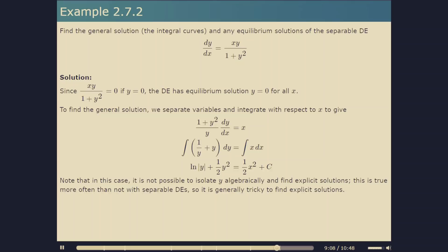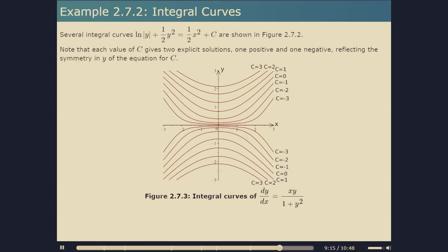Several integral curves of this DE are plotted in figure 2.7.2. Each value of c gives two explicit solutions — one positive and one negative — reflecting the symmetry of the integral curves: ln|y| plus one-half y squared equals one-half x squared plus c is unchanged when y is replaced by negative y. So there are always two curves symmetrically located above and below the x-axis.